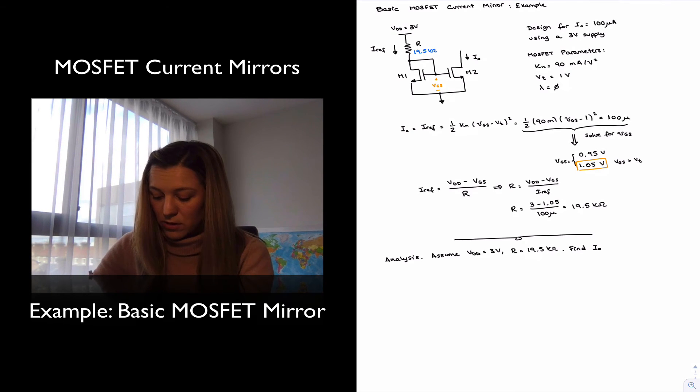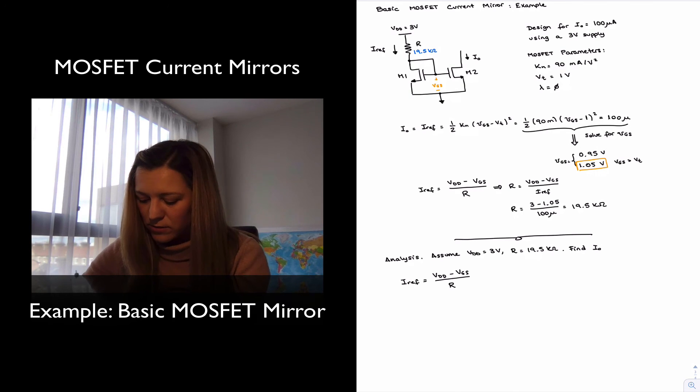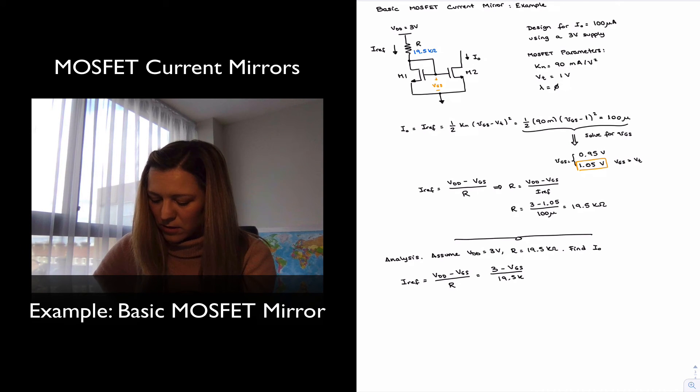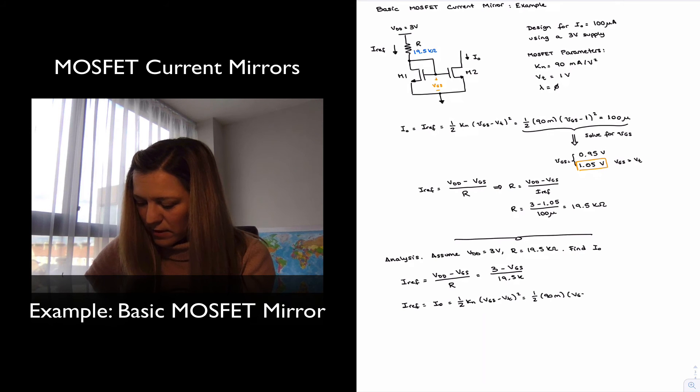And the procedure will be very similar. We will just notice that my reference current, as I wrote before, is equal to VDD minus VGS divided by R. I have the value for R, but I don't have the value for VGS. So this will be 3 minus VGS divided by 19.5 K. And I will notice that my IREF is also equal to I out. And since it's the drain current for a MOSFET transistor, it's equal to one half of KN VGS minus VT squared, or one half of 90 milli VGS minus 1 squared.